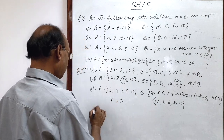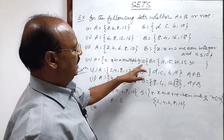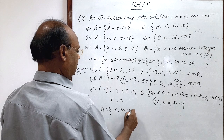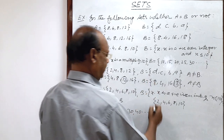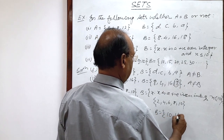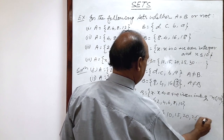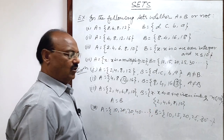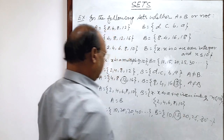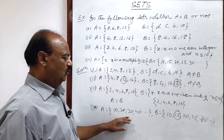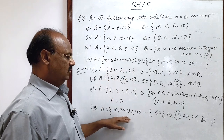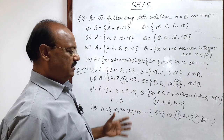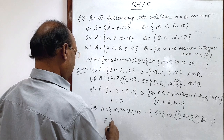The last, fourth part: set A is x such that x is a multiple of 10 — multiples of 10 means 10, 20, 30, 40 and so on. Set B is given having elements 10, 15, 20, 25, 30 and so on. We can see that elements are not exactly the same because 15 is in set B but 15 is not a multiple of 10, and 25 is also there. So both sets A and B have some elements that are different, hence A is not equal to B.